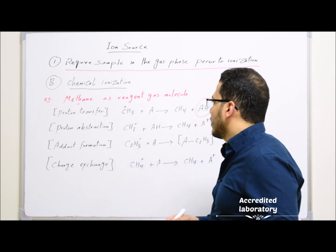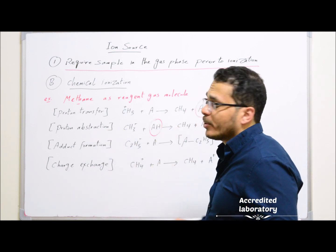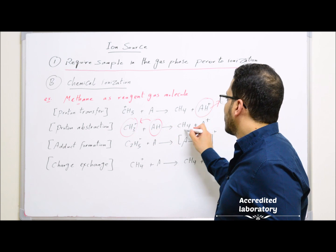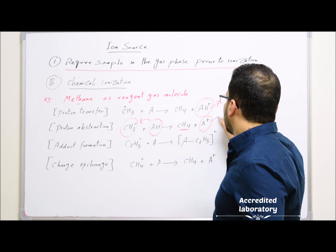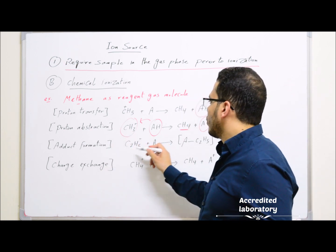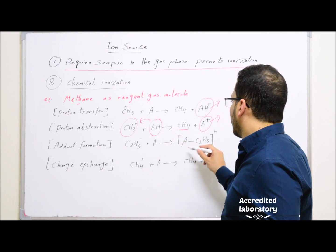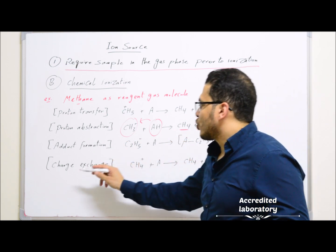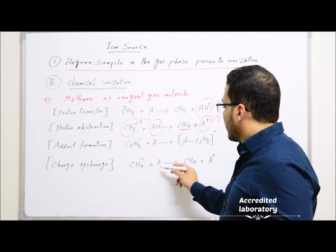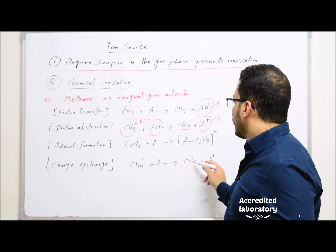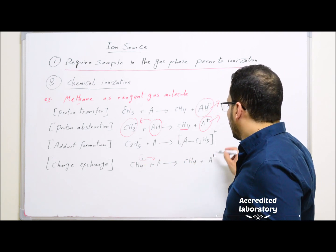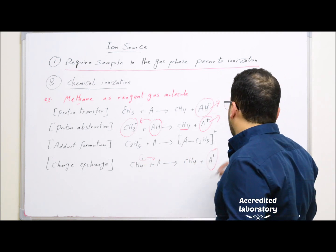In proton abstraction, a proton is taken from the sample molecule by CH3⁺ (the reagent gas ion) to form CH4 plus A⁺, which is the ionized sample molecule. In adduct formation, C2H5⁺ reacts with sample molecule A to form AC2H5⁺. In charge exchange, CH4⁺ reacts with sample molecule A to form CH4, where the charge is transferred to the sample molecule to form A⁺, which is the ionized sample molecule. All these ionized sample molecules will be sent as they are to the mass analyzer and will not be fragmented again.